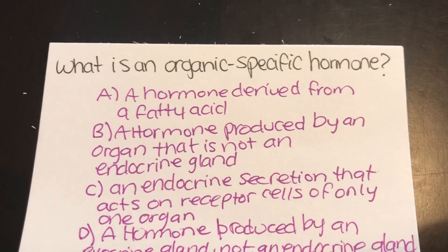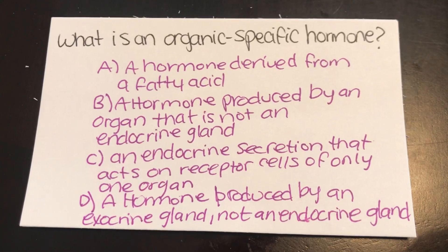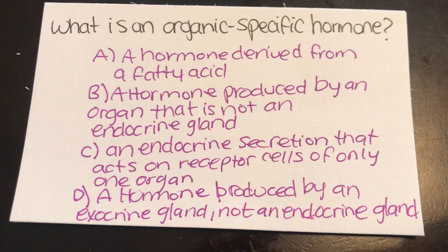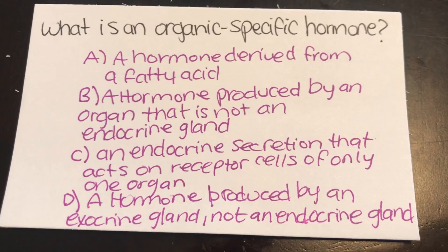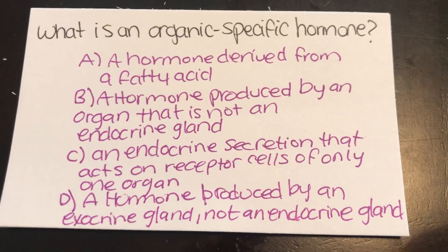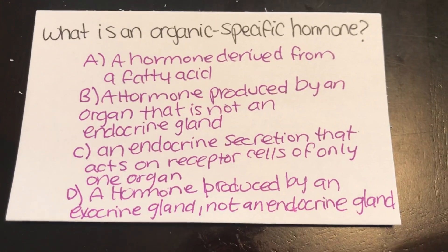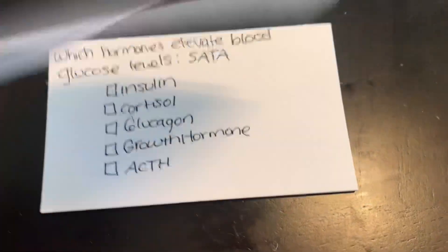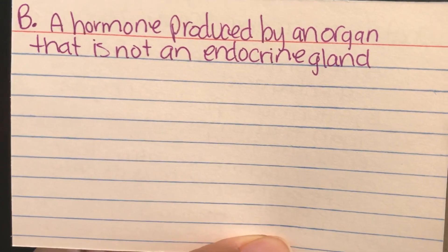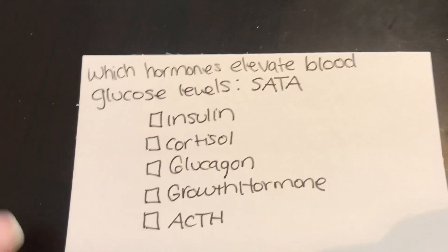Which is an organ-specific hormone? A, a hormone derived from a fatty acid. B, a hormone produced by an organ that is not an endocrine gland. C, an endocrine secretion that acts on receptor cells of only one organ. Or D, a hormone produced by an exocrine gland, not an endocrine gland. Answer: B, a hormone produced by an organ that is not an endocrine gland.